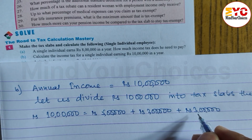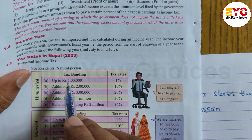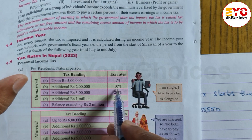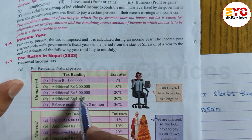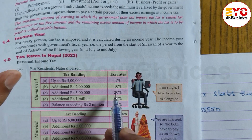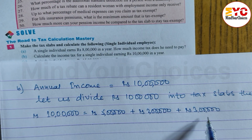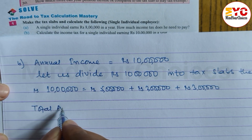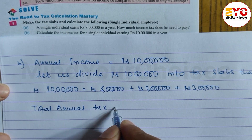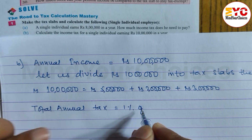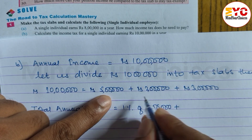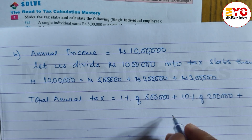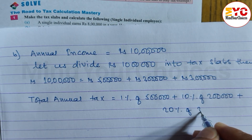We divide 10 lakhs as follows: first 5 lakhs, then additional 2 lakhs (total 7), then additional 3 lakhs (total 10). So the tax slabs are: first 5 lakhs at 1%, next 2 lakhs at 10%, and next 3 lakhs at 20%.